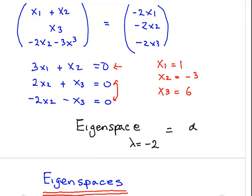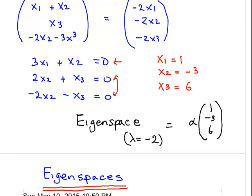The eigenspace for lambda equal minus 2 is as follows. It's alpha, where alpha is some unknown, 1 minus 3 and 6. We don't actually know what alpha is, but we know the proportions are right. That's the eigenspace for lambda equals minus 2. We're going to do that for the other two.